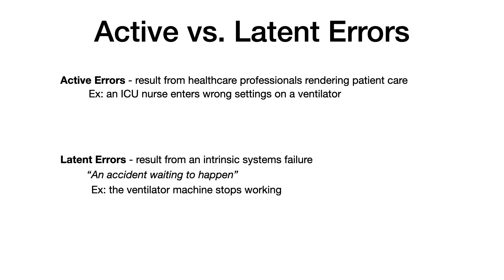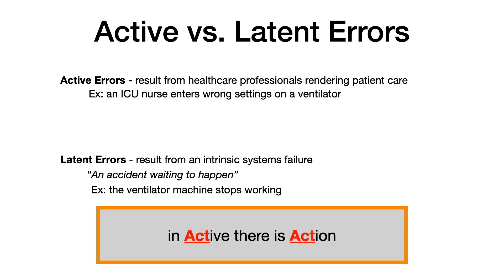Errors can be active or latent. An active error results from a healthcare professional who renders patient care — for example, an ICU nurse enters the wrong settings on a ventilator. This is an active error because it was the result of an individual's action. A latent error, by contrast, involves an intrinsic systems failure. Latent errors are sometimes referred to as an 'accident waiting to happen' — for example, the ventilator machine stopped working on its own. Active requires action; latent does not. My mnemonic: in active, there is action.